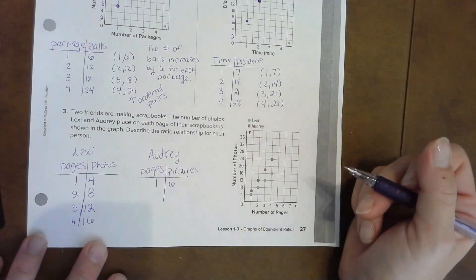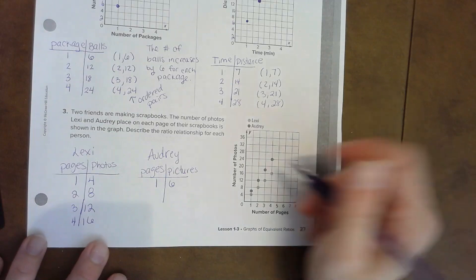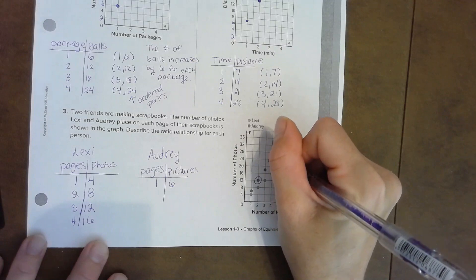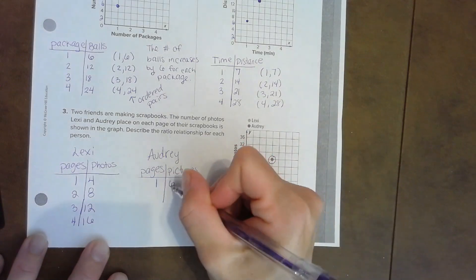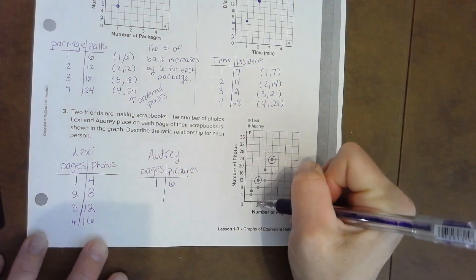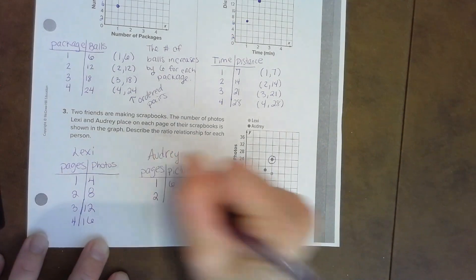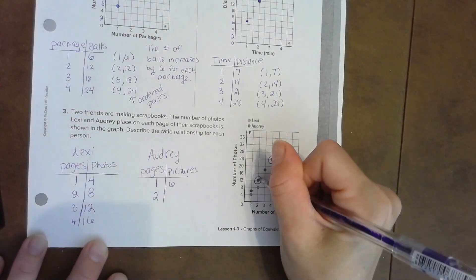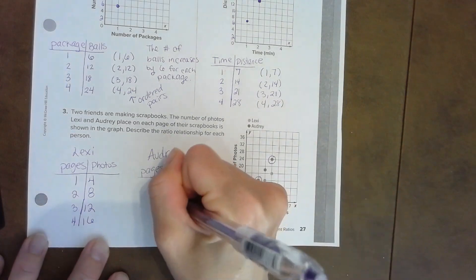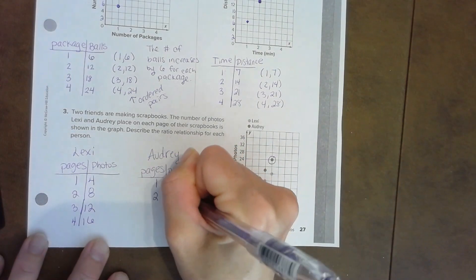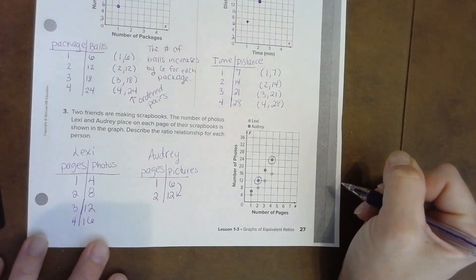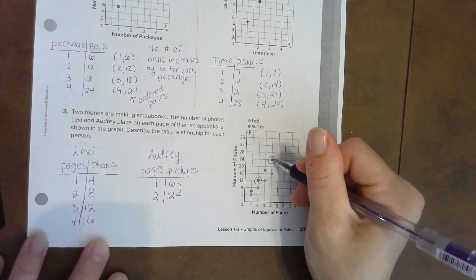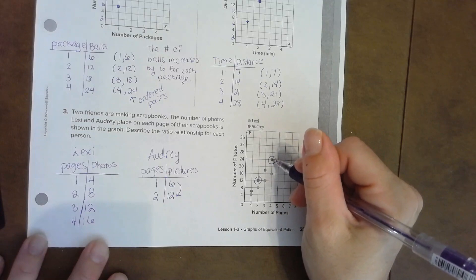Let's double-check the pattern for Audrey. I see there are two that are exactly on the line. So if one to six is correct, then on page two she should be on twelve—two pages, twelve pictures. Yep, that's right. So I just confirmed we are counting by sixes.